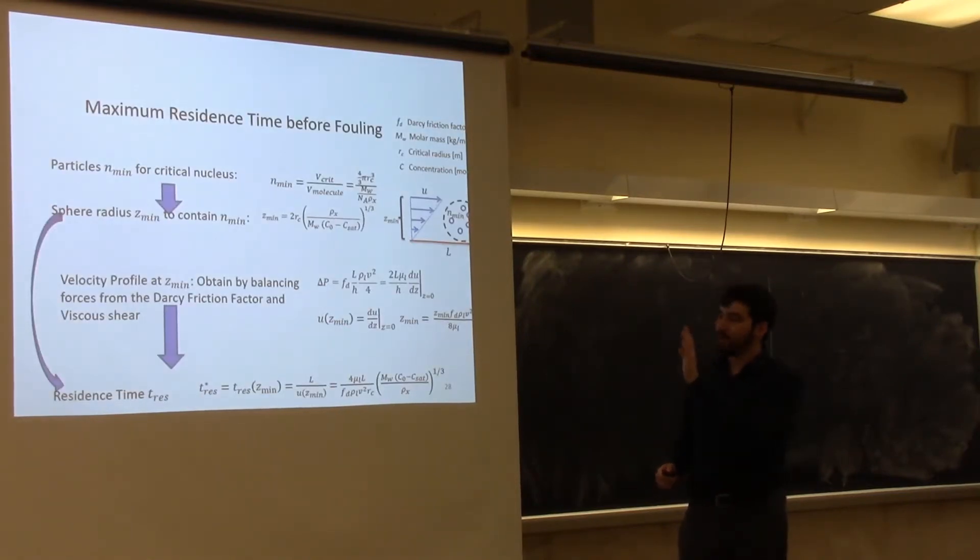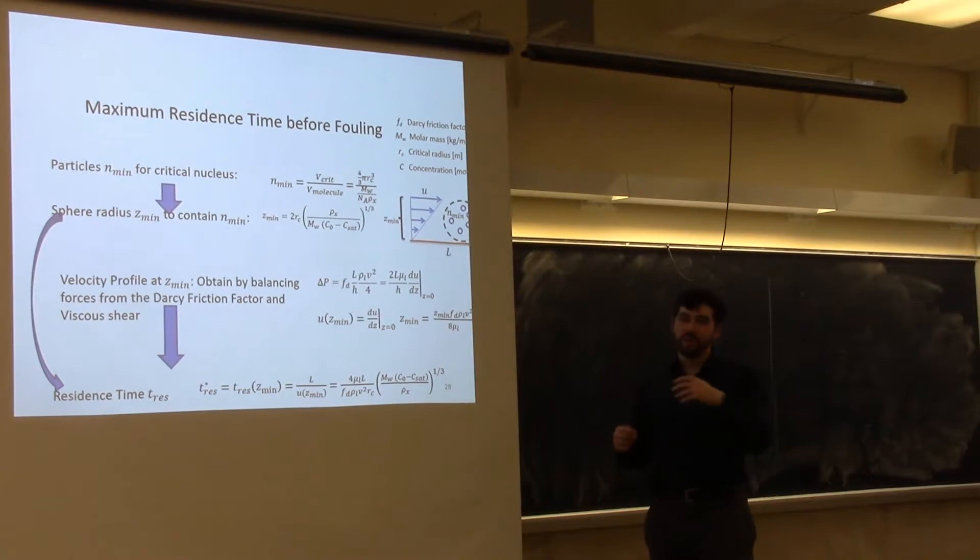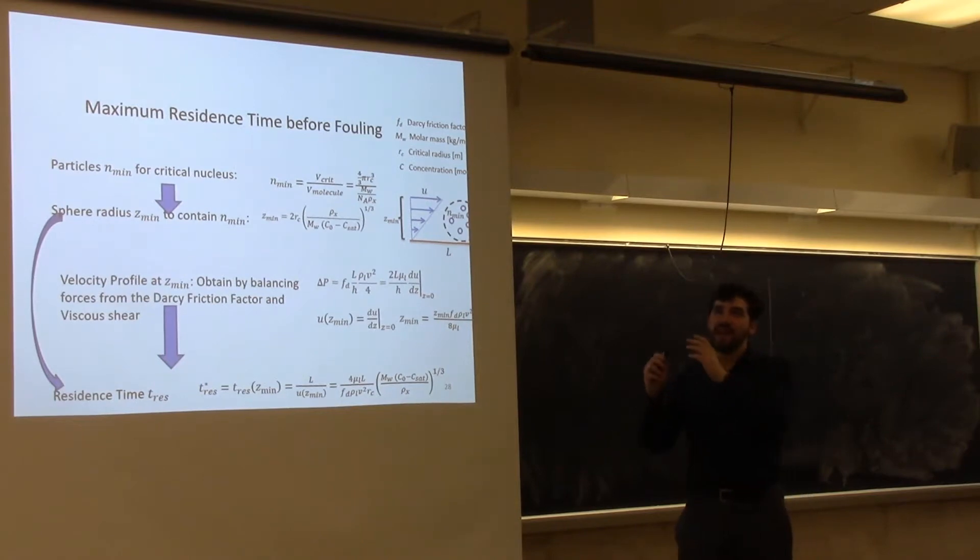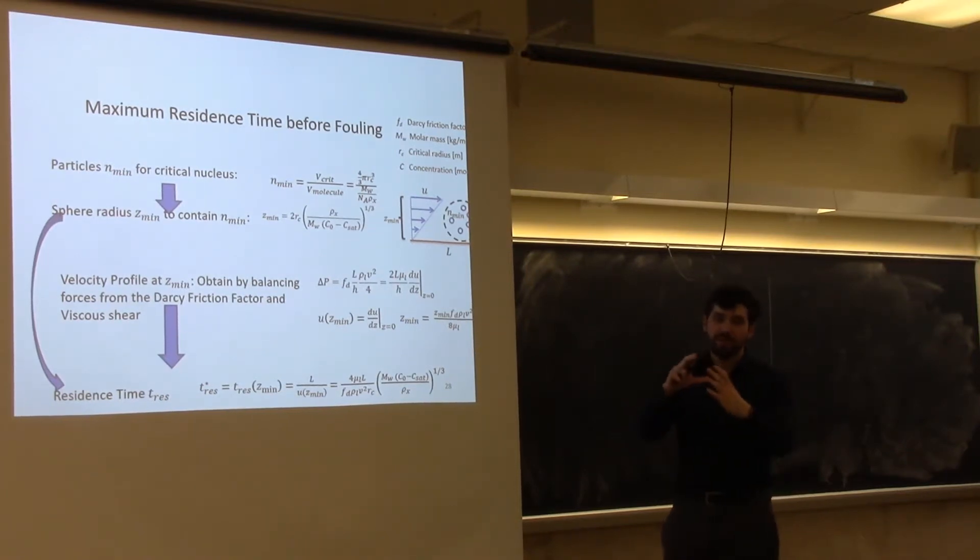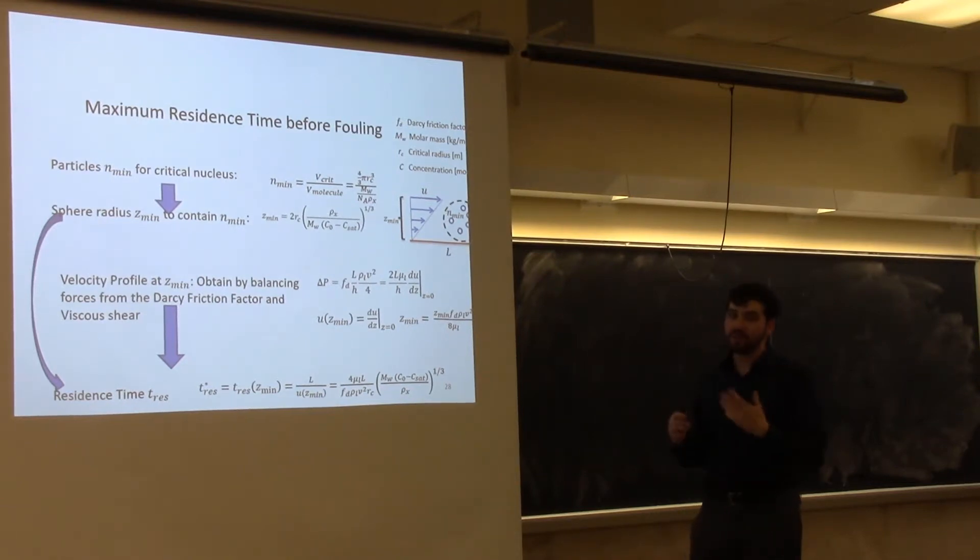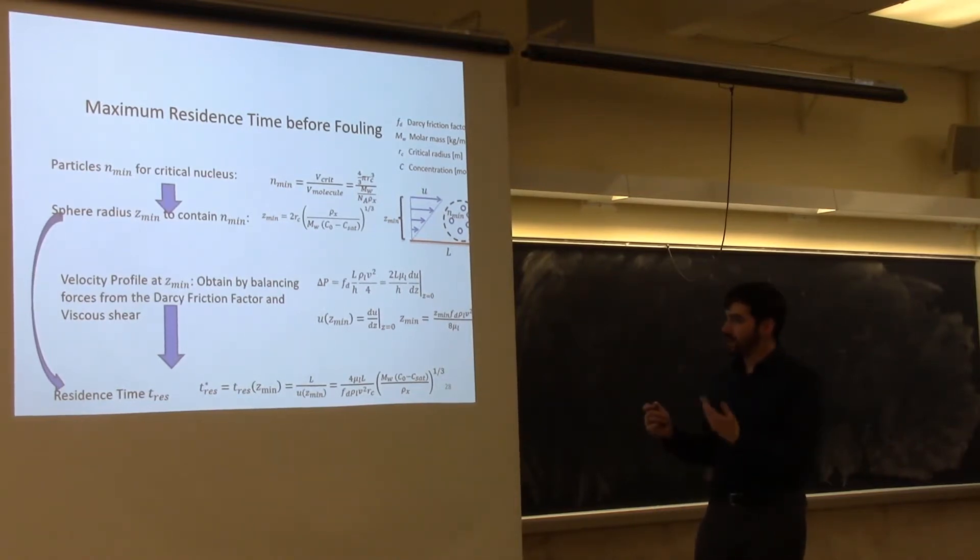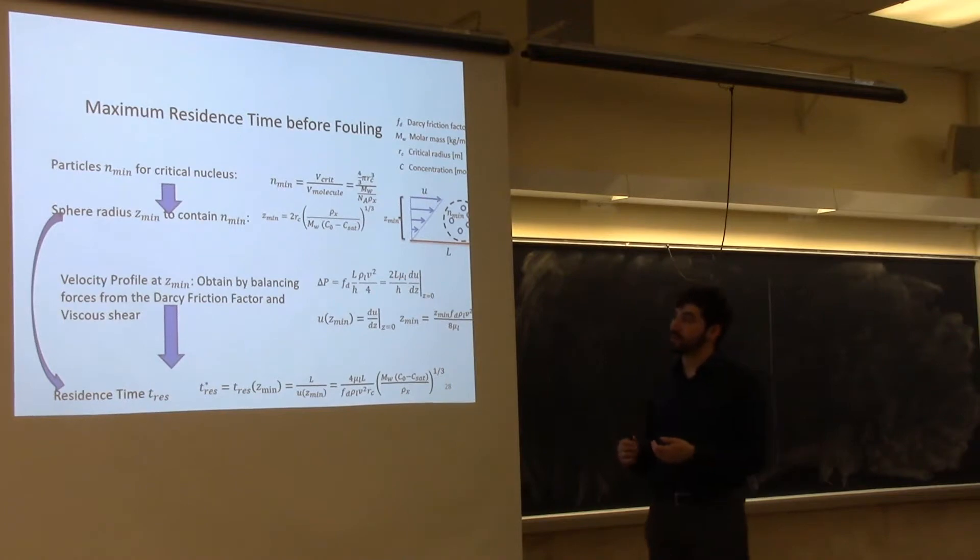I don't want to go into the details, but effectively, if you create a non-dimensionalized framework to model when we would expect a volume fluid element that has enough volume to form a stable crystal nucleus, would have enough time within the system, floating along the boundary layer, to actually be crystallizing, we can use that to make a non-dimensionalized framework to predict when fouling could occur.